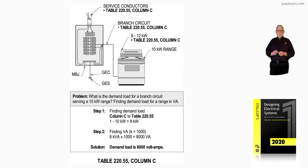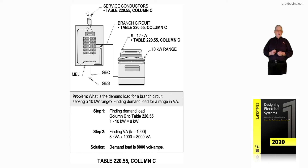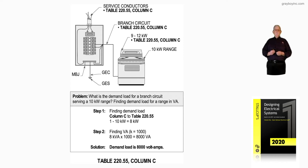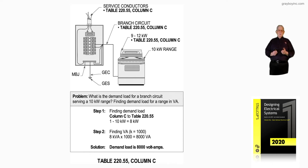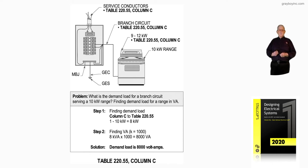Now we're going to get the answer. Step one: we're applying Column C of Table 220.55 for one 10 KW range. There's no math done — it's given to us. It's 8 KW. So step two, we take the 8 KW and express it in volt-amps, as the code does when adding all this up.